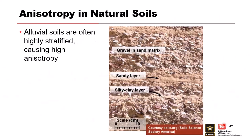Alluvial soils in particular can be highly stratified and have high anisotropy. Looking at a profile with a silty clay layer, a sandy layer, and a gravelly sand mix — the vertical water flow is probably going to be controlled by the permeability of the silty clay layer. But the horizontal flow is probably going to be controlled by your coarser-grained gravels and sand layers. You're going to have very different permeabilities in each direction.